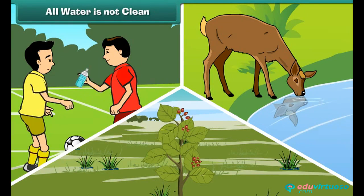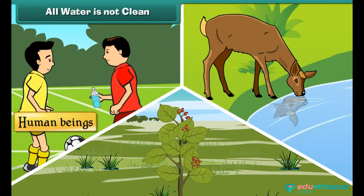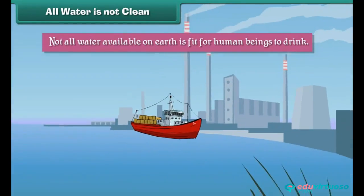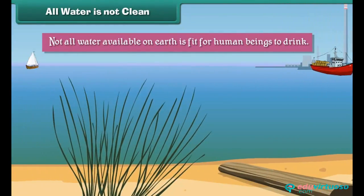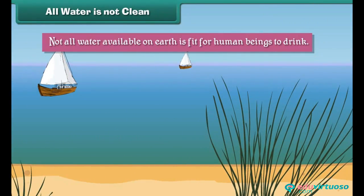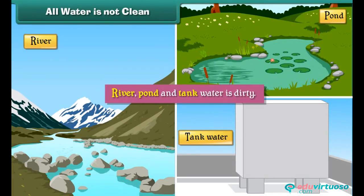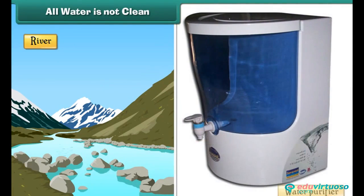All water is not clean. All living things — human beings, animals, and plants — need water to live. But not all water available on earth is fit for human beings to drink. Sea water is salty. River, pond, and tank water is dirty. Therefore water must be cleaned first; only then it becomes fit for drinking.